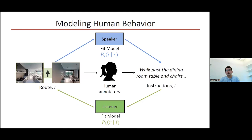To do this, we'll train models to model people's behavior, both for generating instructions. We'll train a speaker model that produces distributions over instructions conditioned on these routes in the visual context, and listener models too, which perform the inverse task—distributions over actions conditioned on instructions and the environment.